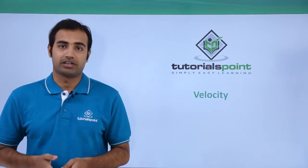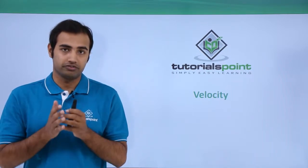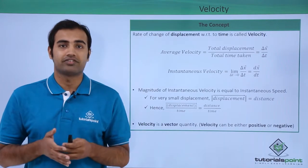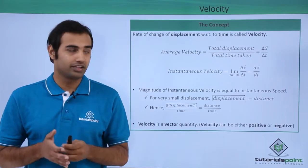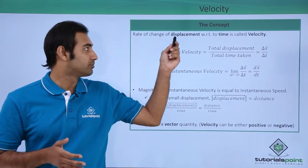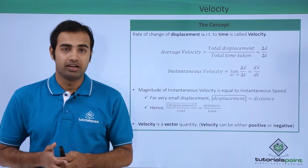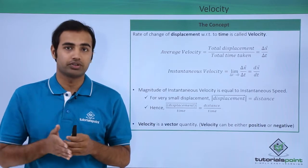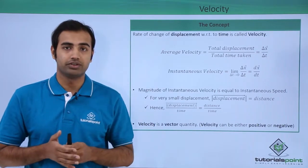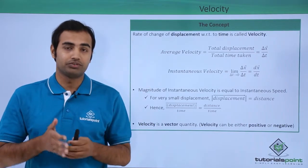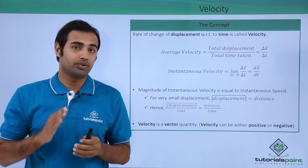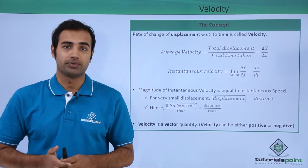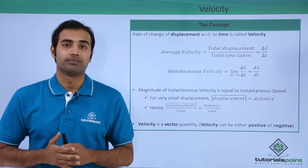Let's talk about the next topic in line which is velocity. Velocity is essentially defined as rate of change of displacement with respect to time. Now clearly displacement is a vector quantity, as we already established in the last video. So velocity, because it's displacement upon time, has to be a vector quantity. So velocity is a vector quantity.